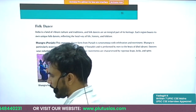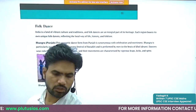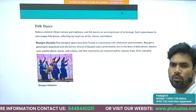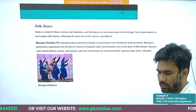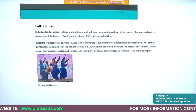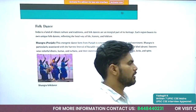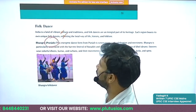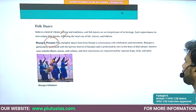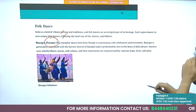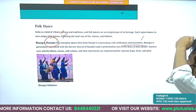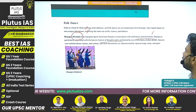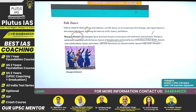Now we will see the folk dances. For folk dances, you should mainly remember the dance name, the state it is associated with, and the occasion when it is performed. First and foremost is Bhangra dance — it is associated with Punjab, synonymous with celebration and merry-making. It is particularly associated with the harvest festival of Baisakhi and performed by men to the beats of dhol.